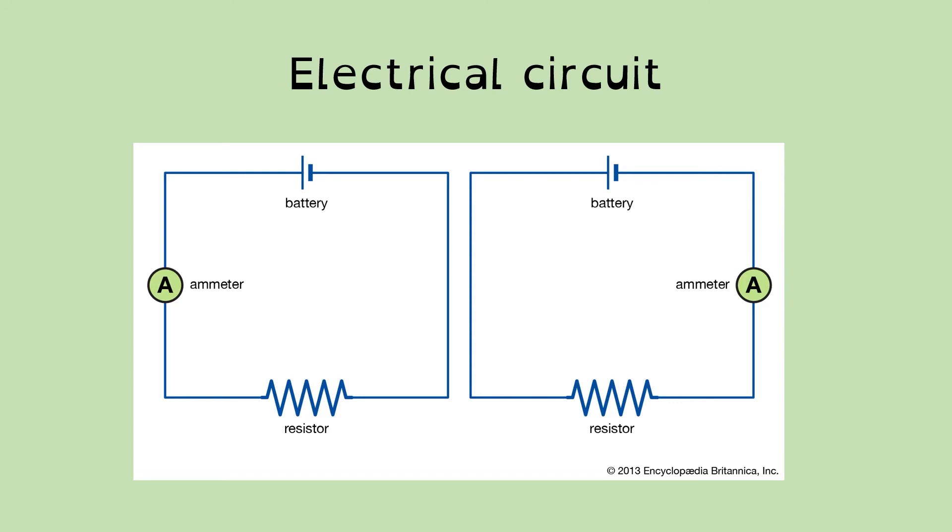So digital circuits tend to, sorry, electronic circuits tend to go around in a circle. Well, not quite a circle, but there's a flow of electricity, especially if you've got a battery here. Flow of electricity from the positive comes around through the wires back to the negative.